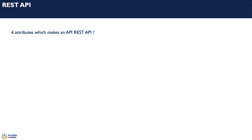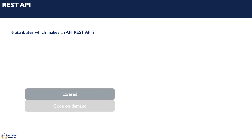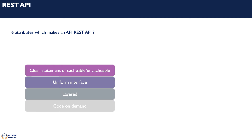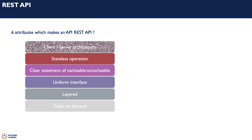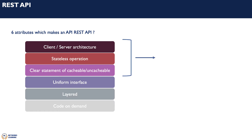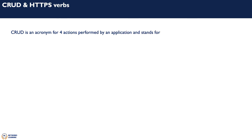Six attributes make an API a REST API: code on demand, layered, uniform interface, clear statement of cacheable and uncacheable, stateless operation, and client-server architecture. You would notice that the top three attributes actually map perfectly to HTTP protocol behavior.